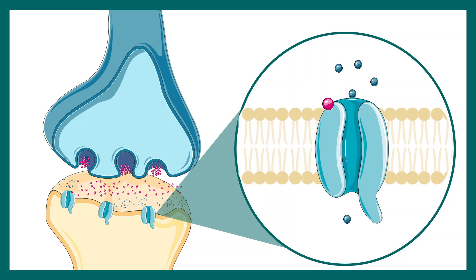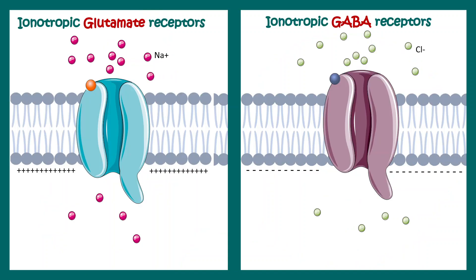This conformational change allows ions — in this case cations — to pass through the channel. When cations enter the post-synaptic membrane, they create a positive charge inside, making the membrane potential more positive and allowing a wave of depolarization. There can also be ionotropic receptors that allow passage of anions, like GABA receptors, found in many types of neurons in our nervous system.